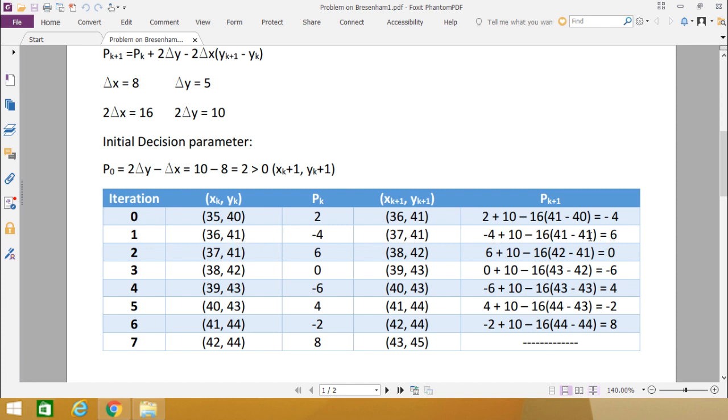Again we are calculating the next pk+1. Here we are having pk equals minus 4, and 2·delta y is 10, so plus 10, minus 2·delta x is 16, so minus 16, and yk+1 - yk, so that is 41 - 41 = 0. So ultimately we are remaining with 6, so 6 is the next pk. In this way you have done the calculations of pk and pk+1.